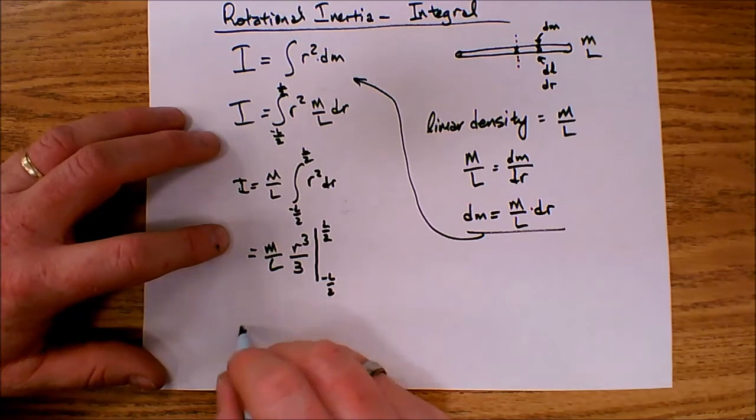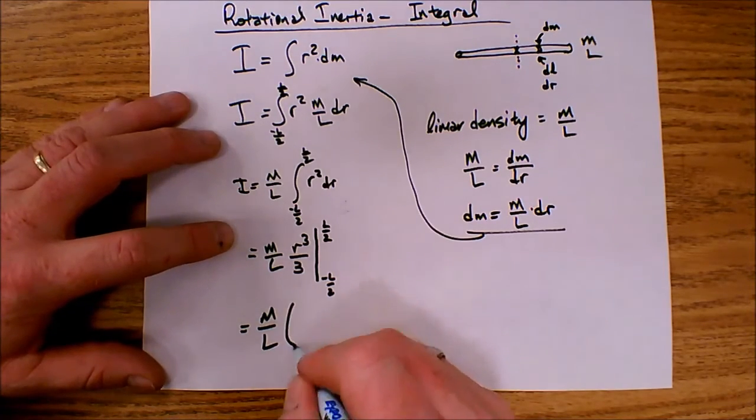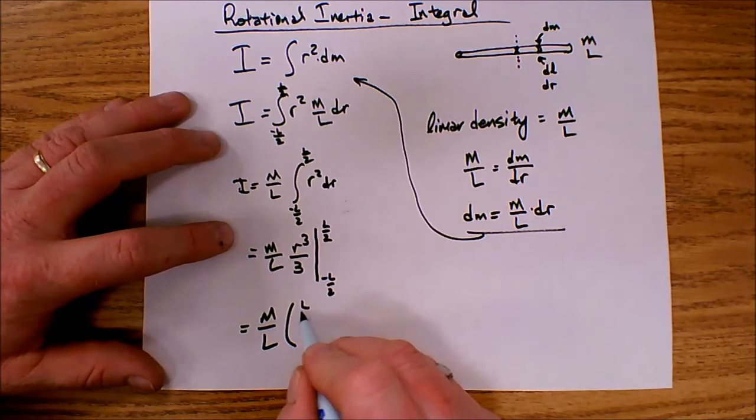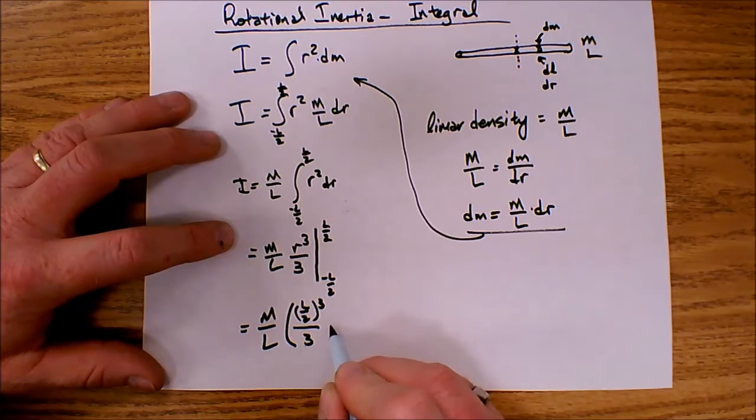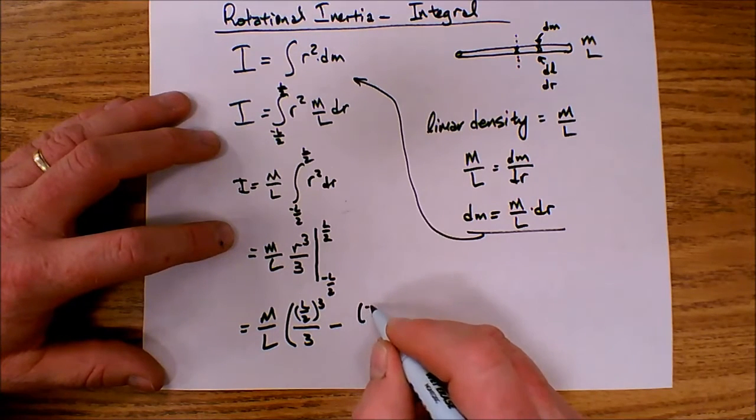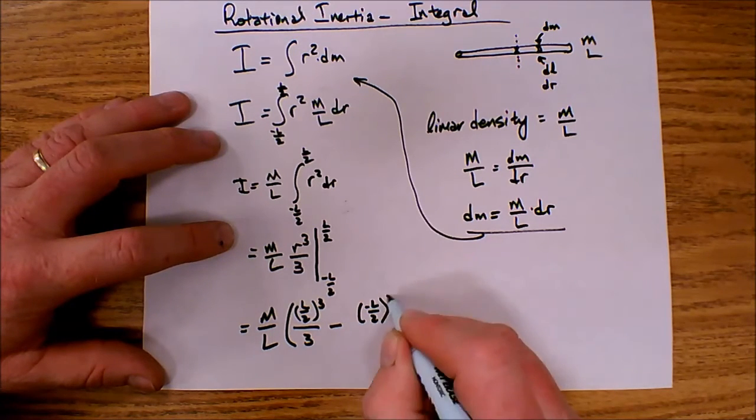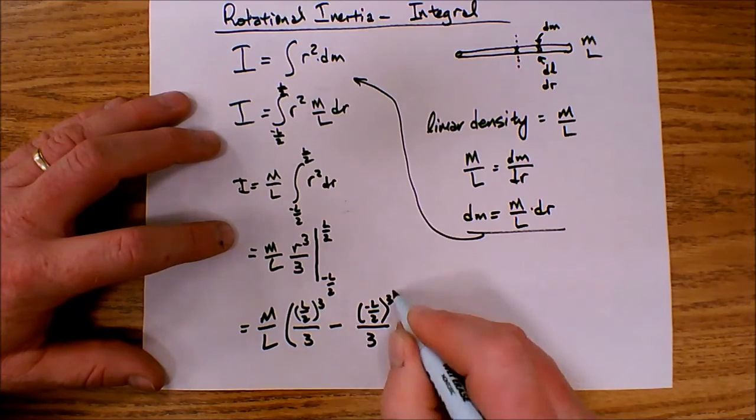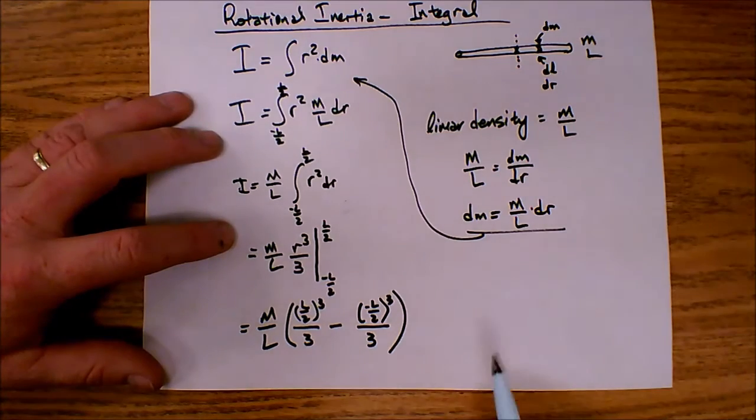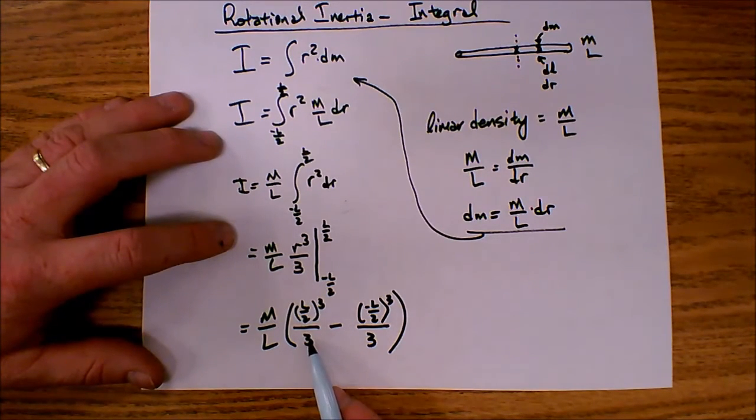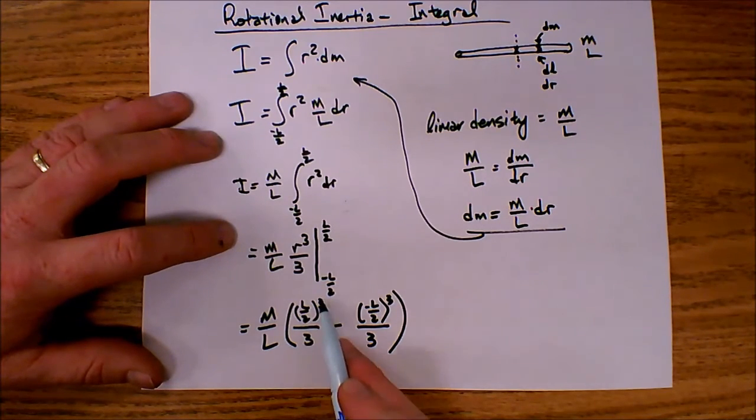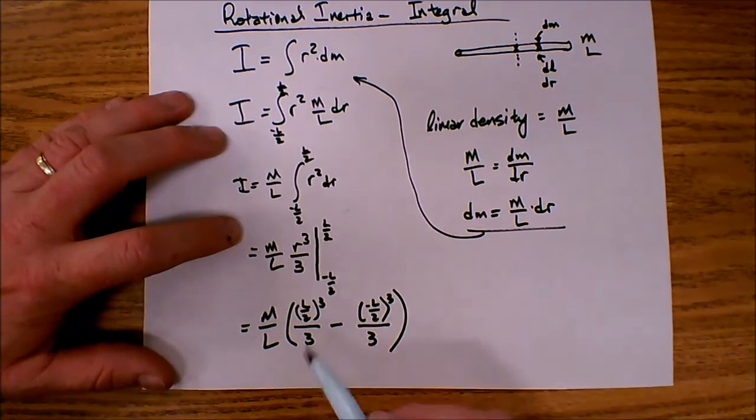So this is going to equal m over l times my final value plugged in which is l over 2 cubed over 3 minus my initial value, minus l over 2 cubed over 3. Well l over 2 cubed is l cubed over 8. And when I take l cubed over 8 and I divide by 3, that's the same as multiplying by 1 over 3. So l cubed over 8 times 1 over 3 is l cubed over 24.